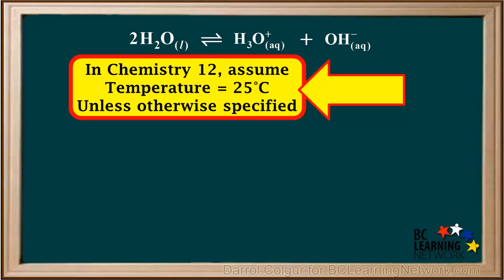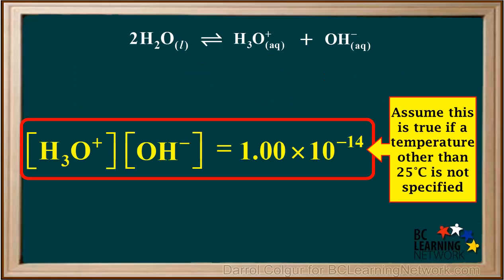In Chemistry 12, we can assume that the temperature is 25 degrees unless a different temperature is specified. So unless a temperature other than 25 degrees is specified, we can assume that the product of hydronium and hydroxide ion concentrations is 1×10⁻¹⁴.